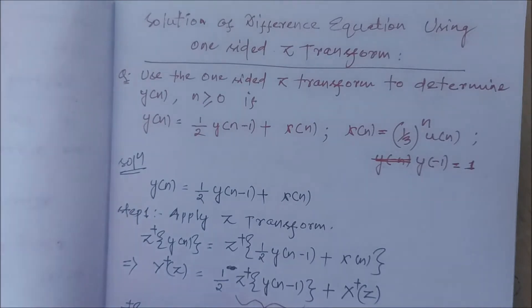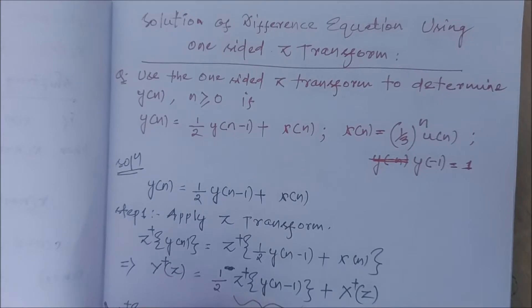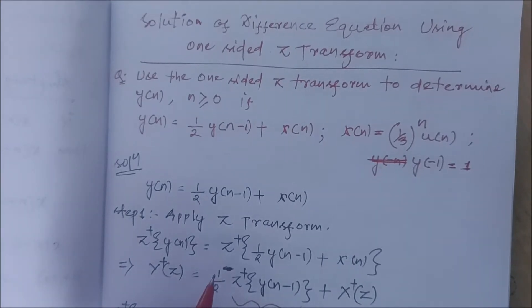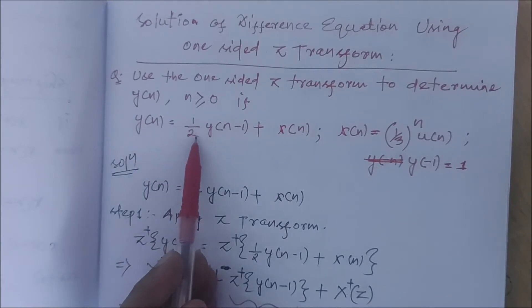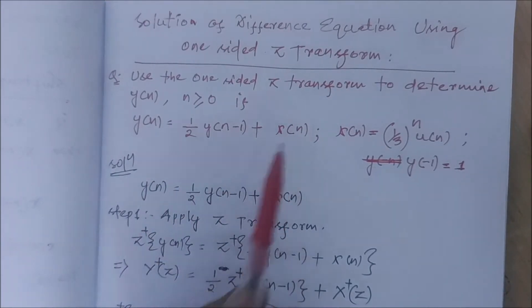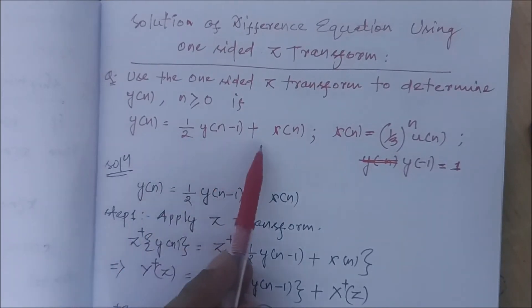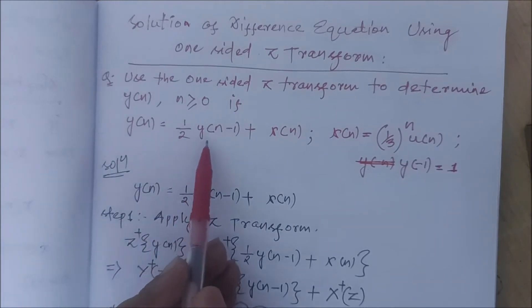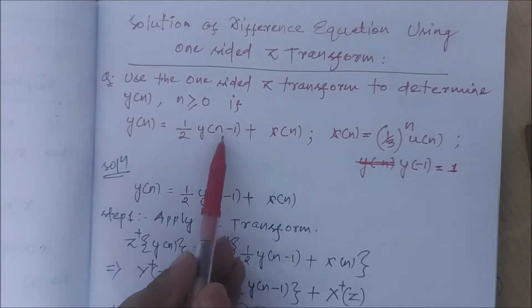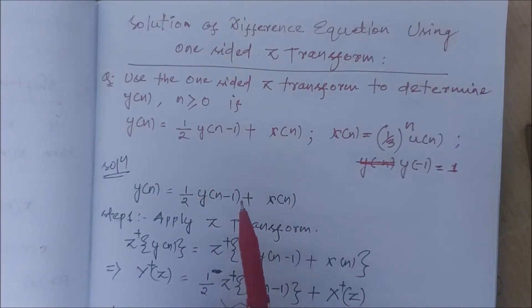Hello everyone. In this lecture we will see how we can use a one-sided Z-transform or unilateral Z-transform to solve a difference equation. The difference equation is given as y(n) = (1/2)y(n-1) + x(n). This particular difference equation is called a recursive first-order difference equation — recursive because we have a shifted version of the output, and first order because the shifting is done by one unit only.